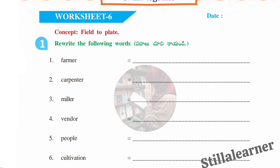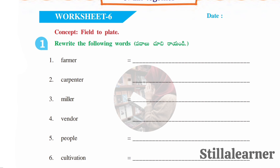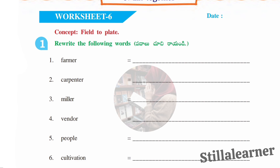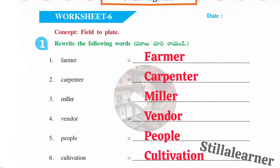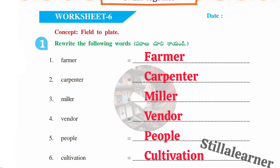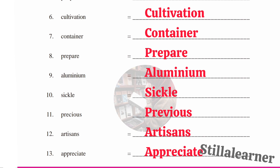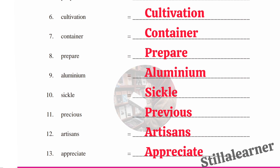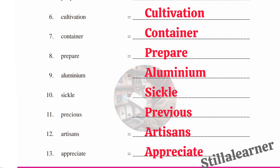From the 'Field to Plate' concept, the thirteen words to rewrite with capital first letters are: farmer, carpenter, miller, vendor, people, cultivation, container, prepare, aluminium, sickle, precious, artisans, and appreciate.